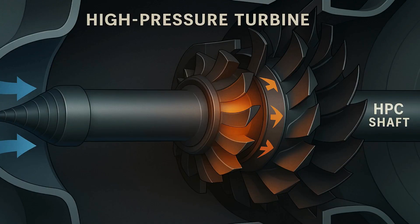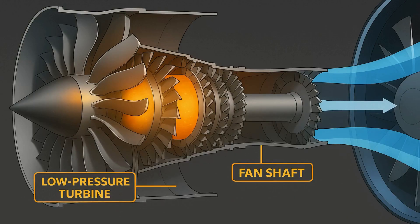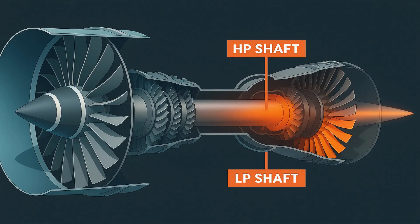Beyond the combustor, the hot gases blast into the high-pressure turbine. This turbine connects to the high-pressure compressor via a central shaft. As gases rush over the turbine blades, they spin the shaft, driving the compressor and sustaining the cycle. Further downstream, the low-pressure turbine grabs remaining energy to drive the fan and the low-pressure compressor. These turbines endure intense heat and forces. Engineers shape blades with internal cooling channels and coat them with ceramic barriers. Today's blades often form from single-crystal super-alloys, which resist deformation at temperatures exceeding 2,000 degrees.